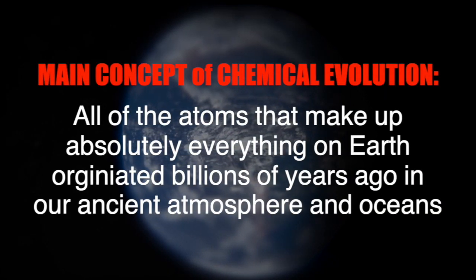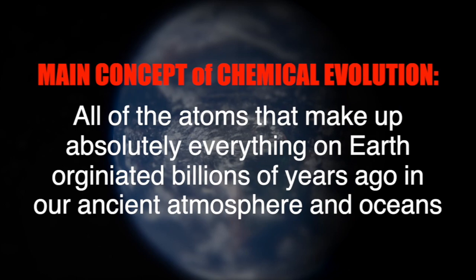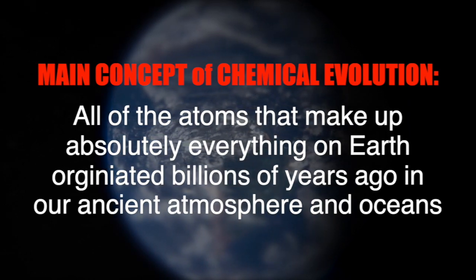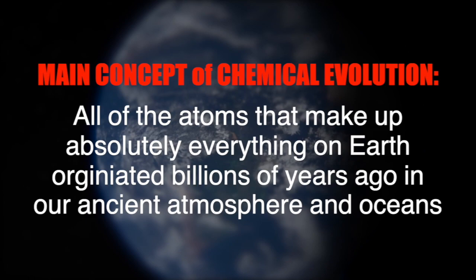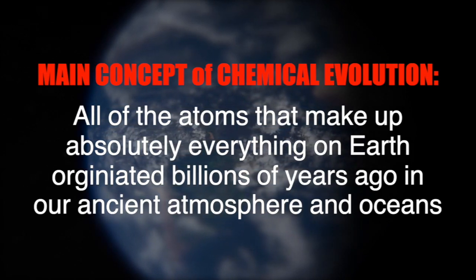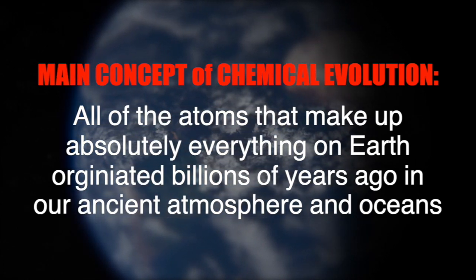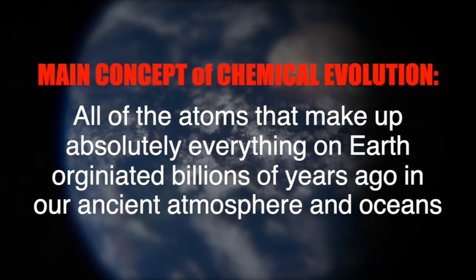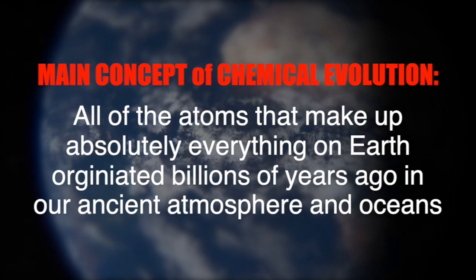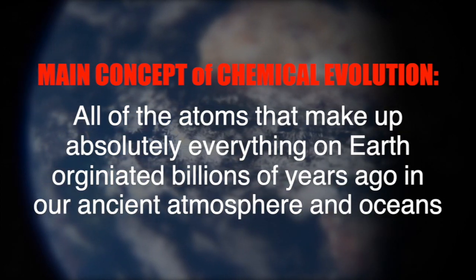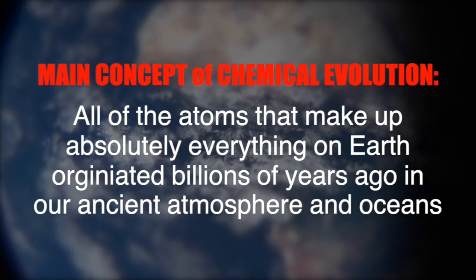To summarize everything into one simple idea: all of the atoms inside of us started billions of years ago within our atmosphere and deep within our oceans. That is the amazing thing about the origin of life and chemical evolution — it started out with such simple elements, and through so many rounds of chemical evolution over billions of years, we now have such diverse and incredible life on this planet. Thank you so much for joining us on this two-part series — we hope you learned a lot. We'll see you next time.